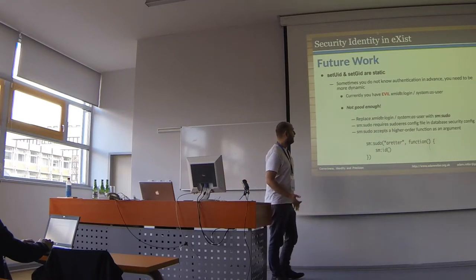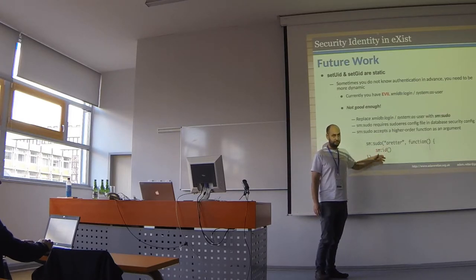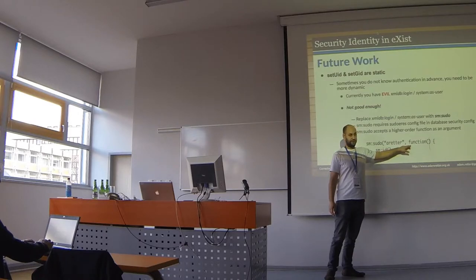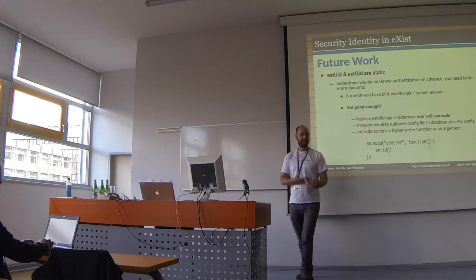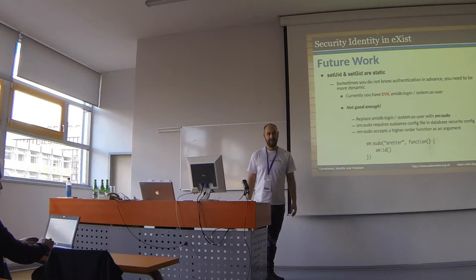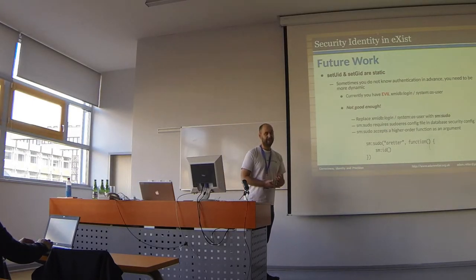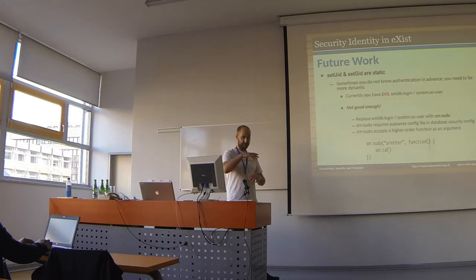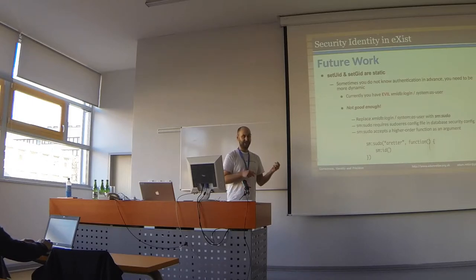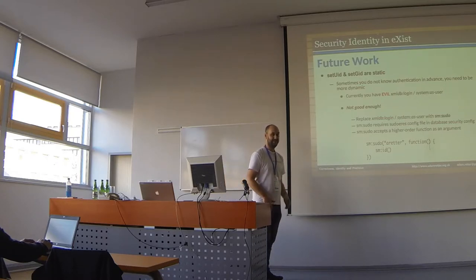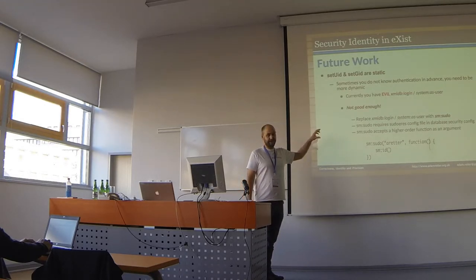For sudo, you give it a username — you don't have to provide the password — and a function as the other argument, and it will execute that function as that user. How does it know if guest can sudo to user A? You have to have a sudoers config file, so you'll need to create an XML config file in the database security config area, with equivalent dashboard and admin client tools for people to easily manage the sudoers config. You can only update sudoers config if you're a DBA, but you can grant someone the right to sudo to become a DBA.